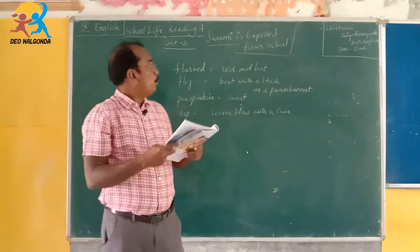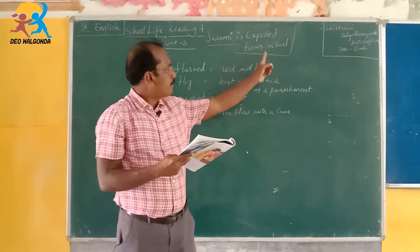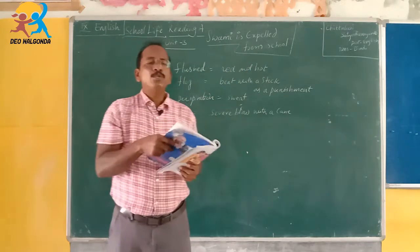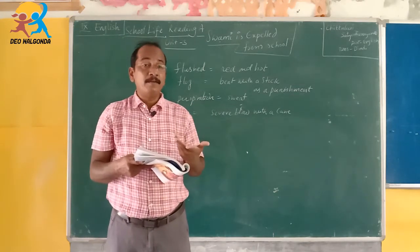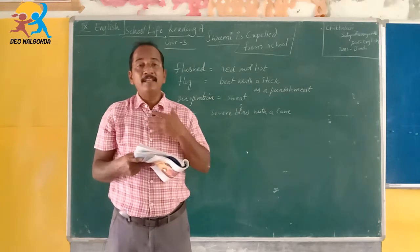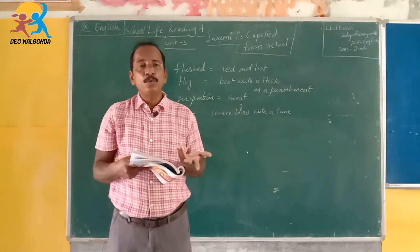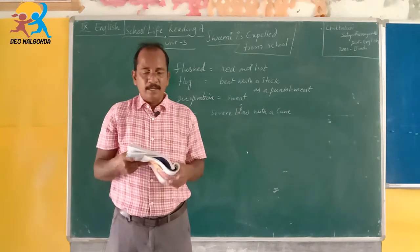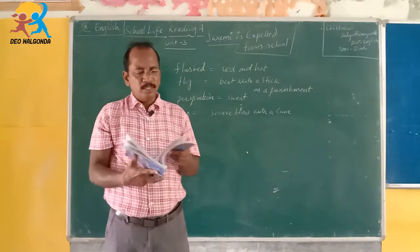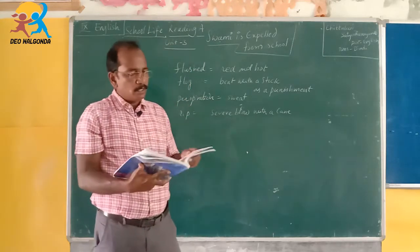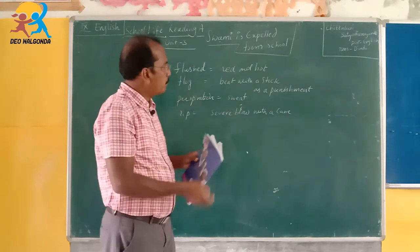Coming to Reading A in Unit 3 with the title 'Swami is Expelled from School.' Expelled means removed — Swami is removed from school. Who was Swami? Why was he removed from school? When we get into this lesson, we come to know all those things. Before getting to the lesson, we had better know a few things about the author, R.K. Narayan.